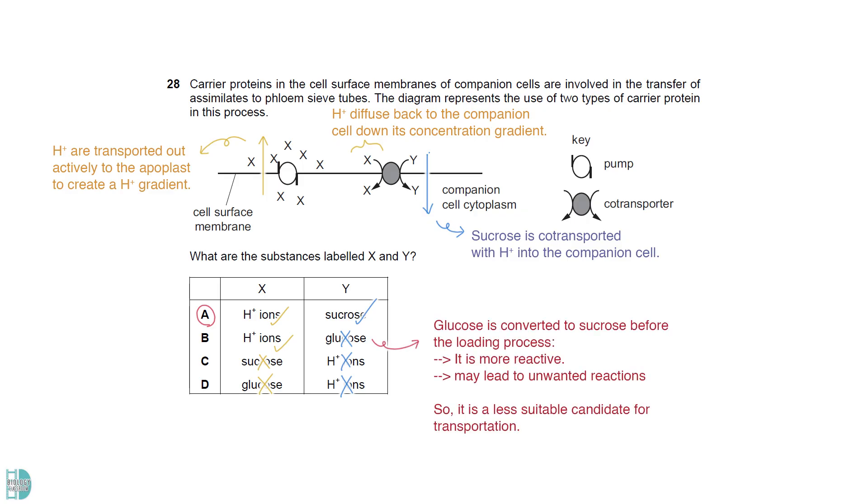Glucose is converted to sucrose before the loading process, as it is more reactive than sucrose. This may lead to unwanted reactions, making it a less suitable candidate for transportation.